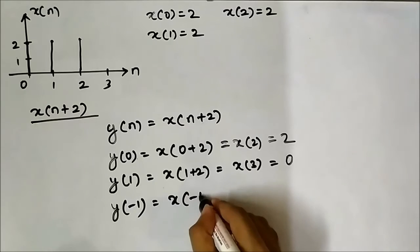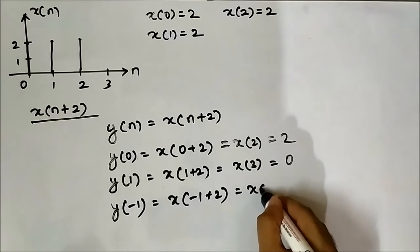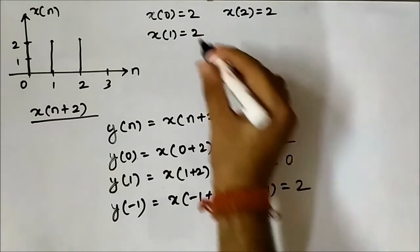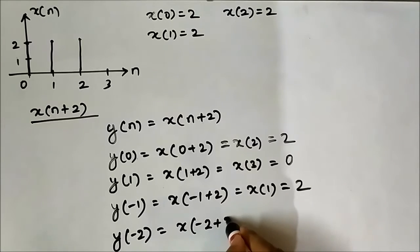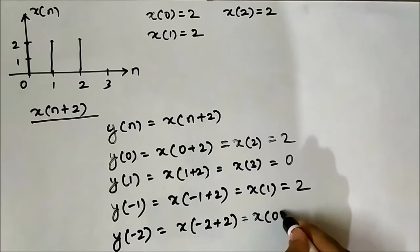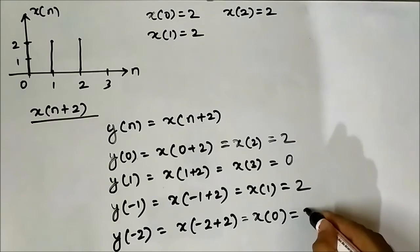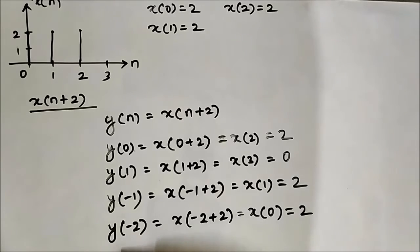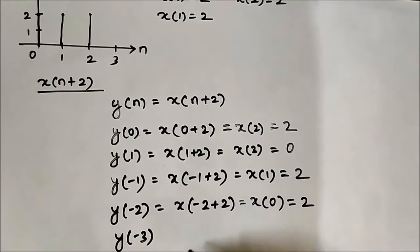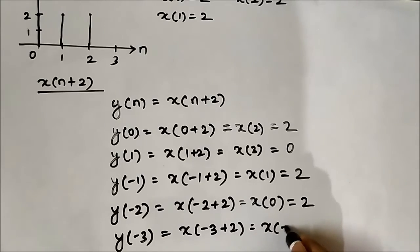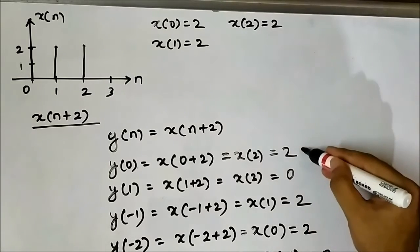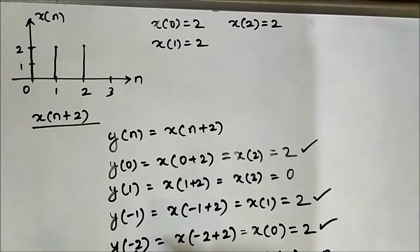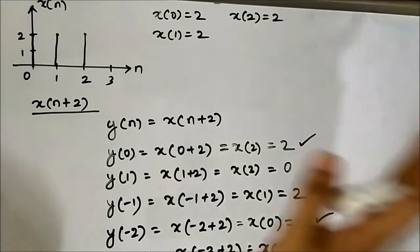At n=−1: y(−1) = x(−1 + 2) = x(1) = 2. At n=−2: y(−2) = x(−2 + 2) = x(0) = 2. At n=−3: y(−3) = x(−3 + 2) = x(−1) = 0, since there is no value at n=−1. So the three key points are y(0), y(−1), and y(−2), all equal to 2.